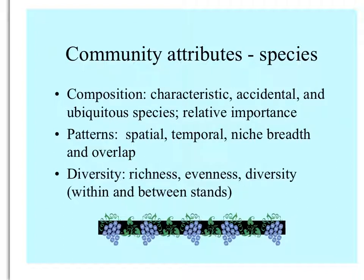Species in a community may be characteristic — always found — or accidental, occurring now and then. Some species are ubiquitous, found not only in this community but in many others. We can also compare species on their relative importance, usually determined by the abundance or cover of individuals of that species. There are different kinds of patterns to look at: spatial and temporal patterns, where species may become dominant or less important at different times, and how broad species' niches are and whether those niches overlap.